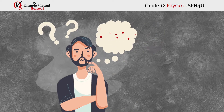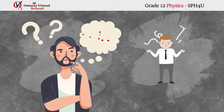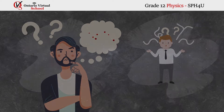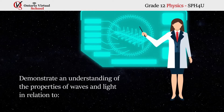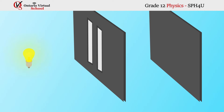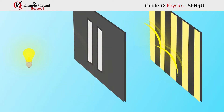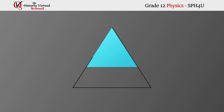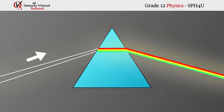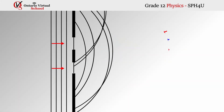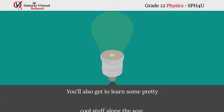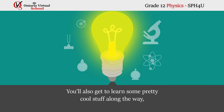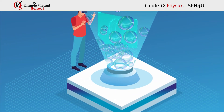The wave nature of light: have you ever wondered what light is — is it a wave or is it a particle? This question baffled scientists and philosophers for generations. In this unit we will demonstrate an understanding of the properties of waves and light in relation to diffraction, refraction, and interference. You'll also get to learn some pretty cool stuff along the way, like how 3D glasses work and why soap bubbles are so colorful.